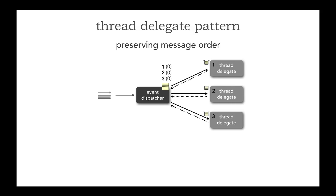Now, if message order doesn't need to be preserved, then the allocation map only needs to contain the count. We start sending to threads, and once we maximize those threads, we queue up based on a least-used algorithm to distribute the load. This is essentially the architecture pattern of how thread managers and connection managers work.